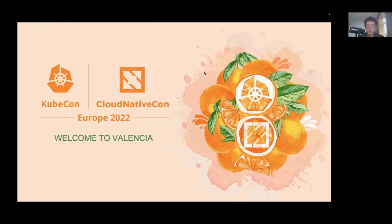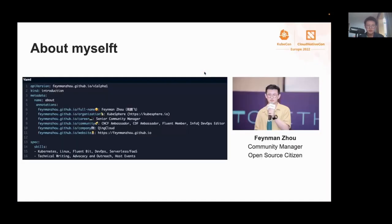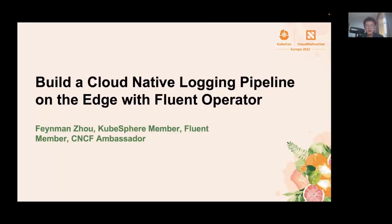Before we get started with this presentation, let me briefly introduce myself. My name is Fei-Man Zhou. I'm from the KubeSphere team. I'm a senior community manager at Chain Cloud KubeSphere, and I'm also a CNCF ambassador, CDF ambassador, and Fluent member. My skills include but are not limited to Kubernetes, Linux, FluentBit, FluentD, DevOps, and serverless. I really enjoy technical writing, advocacy, outreach, and hosting events. In this talk, I will demonstrate how to build a cloud-native logging pipeline on the edge with Fluent Operator.